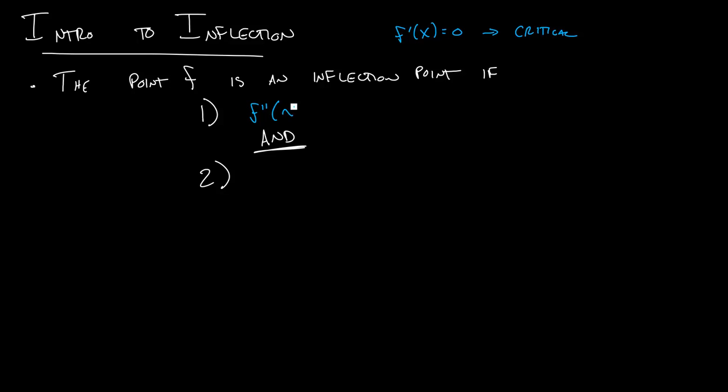So that's the first thing we want to look for when we're talking about inflection points. And we'll talk about how to find this later, but this is really the definition. f double prime of x is equal to 0, but we're going to add one more thing here.